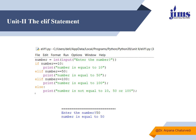Another example: I accepted a number from the user and checked using `elif` — if the number equals 10, display that message; if it equals 50, display another; if it equals 100, display another; otherwise say 'it is neither 10 nor 50 nor 100'. I entered 50, and it printed that the value equals 50.